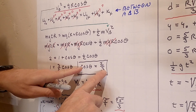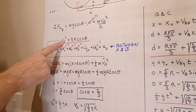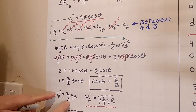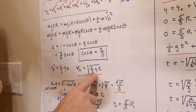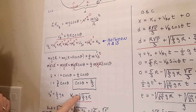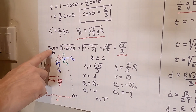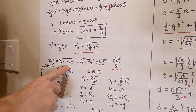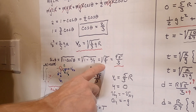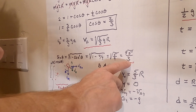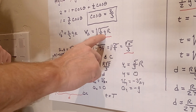Since we know cosθ = 2/3, we can plug back in to get v_B. v_B² = (2/3)gR, so v_B = √(2gR/3). We'll also need sinθ: sinθ = √(1 − cos²θ) = √(1 − 4/9) = √(5/9) = √5 / 3. So we now know sinθ, cosθ, and the speed v_B at the departure point.